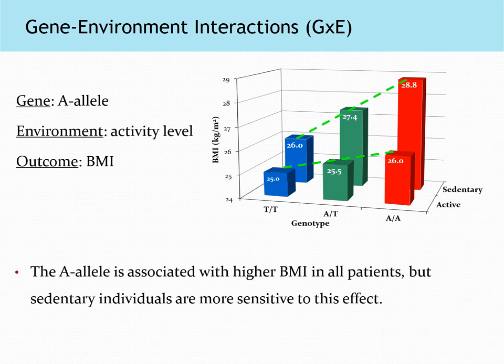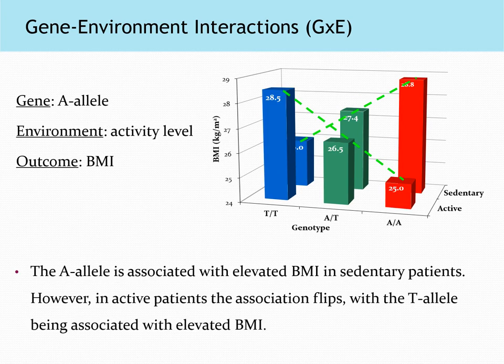This next example uses the same gene, environmental factor, and outcome, but the data suggests that individuals with the A allele tend to gain weight more easily regardless of activity level. This effect is more apparent in sedentary individuals — so the A allele is associated with higher BMI in all patients, but sedentary individuals are more sensitive to this effect. In the final example, the A allele shows a strong association with elevated BMI in sedentary patients, but in active patients the association flips and the T allele appears strongly associated with elevated BMI. These slides were just to illustrate what kinds of effects we can see from gene-environment interactions — there won't be anything like this on the exam.